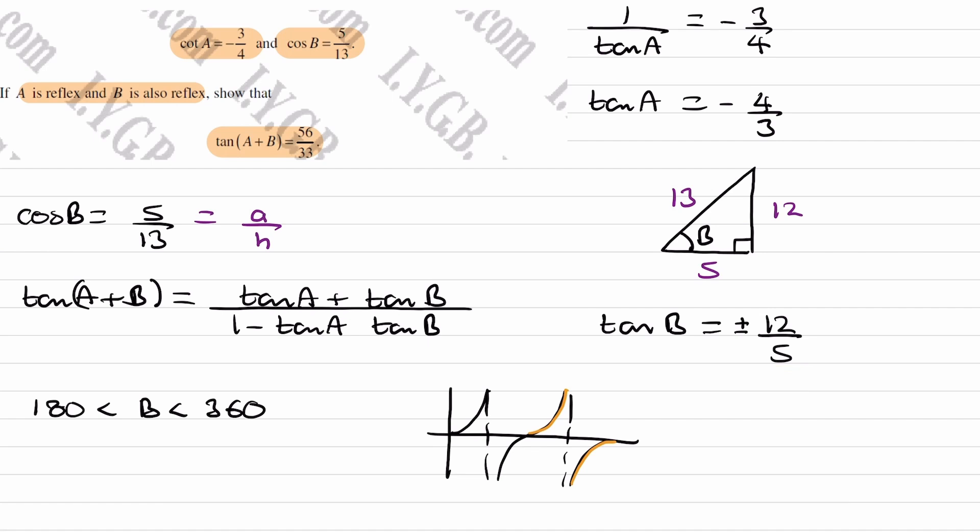But if we look at cos B, cos B is equal to positive 5 over 13. Now if we consider a cos graph, if cos B is positive, and we also know that we're considering again the interval of 180 to 360,